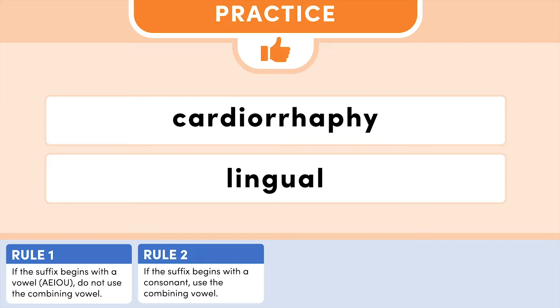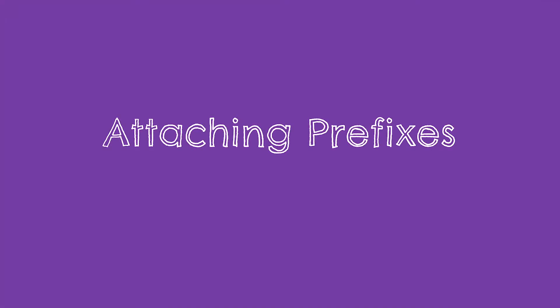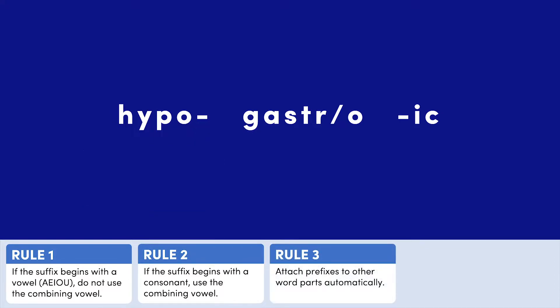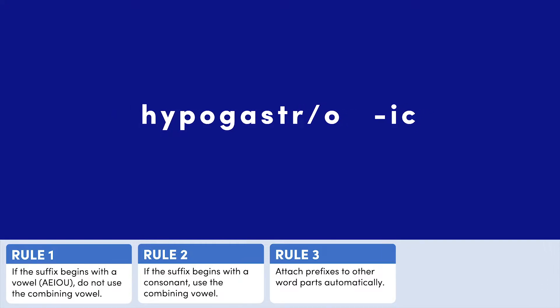Next, you will learn how to attach prefixes. Notice the hyphen placement on the prefix — this indicates that the prefix attaches to the front of a word. When attaching prefixes to other word parts, follow Rule 3, which states to attach prefixes to other word parts automatically. So here it doesn't matter if 'hypo' or 'gastro' begins with a vowel or consonant — we will attach them automatically to form 'hypogastro.'